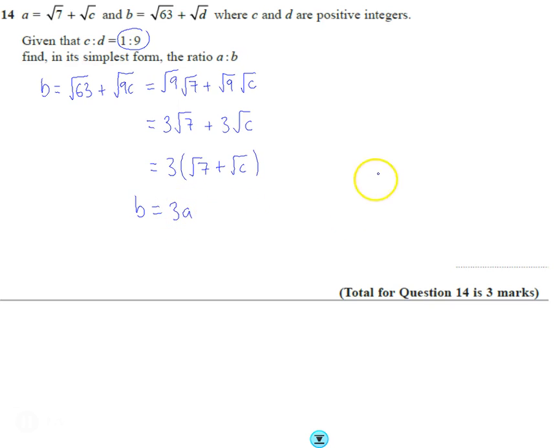then, well, if I write the ratio A to B, let's think about what I did up here with nine C, then, well, A must be worth one, and B must be worth three.